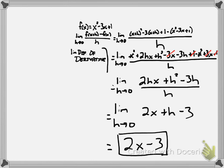What does this mean? This means that the derivative of my original function, the derivative of x² - 3x + 1 is 2x - 3. That's what that means. I've just shown it by the limit definition.